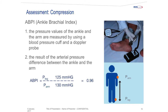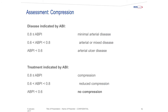Clinicians will use an assessment tool called the ankle brachial pressure index (ABPI) to assess the amount of arterial disease a patient may have. The pressures at the ankle and the arm are measured using a blood pressure cuff and a Doppler probe. The result of the pressure difference between the ankle and the arm indicates the ABPI. If a patient has an ABPI of 0.8 or greater, there is minimal arterial disease. An ABPI of 0.6 to 0.8 indicates mixed arterial and venous disease requiring lighter compression. If the ABI is below 0.6, the patient has significant arterial disease and would not be a candidate for compression.